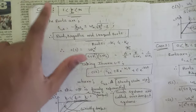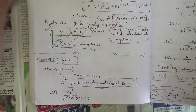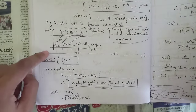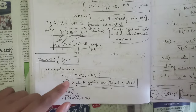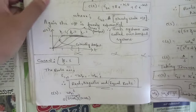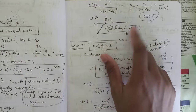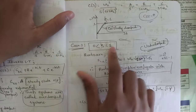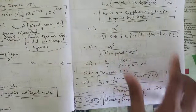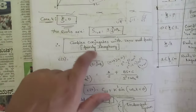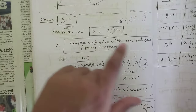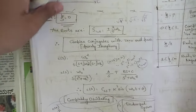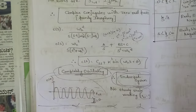When ζ = 1, the roots are real, negative, and equal, and the system is critically damped. When ζ lies between 0 and 1, the response is under-damped and the roots are complex conjugates with negative real parts. When ζ = 0, the roots are purely imaginary complex conjugates with zero real parts, and the system is undamped — completely oscillating.